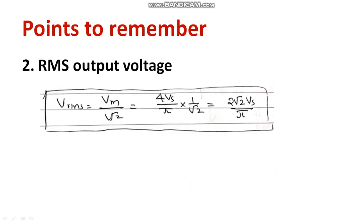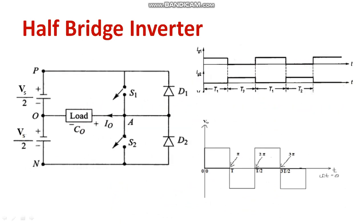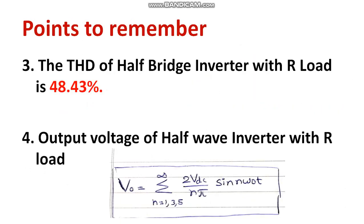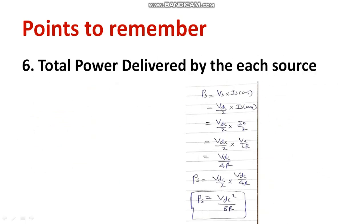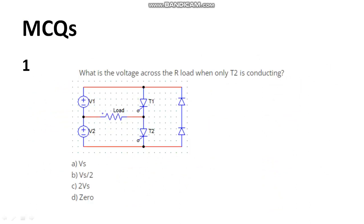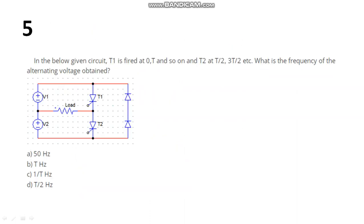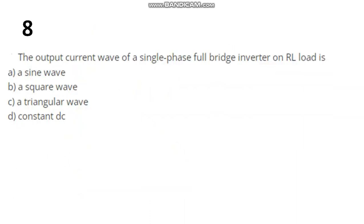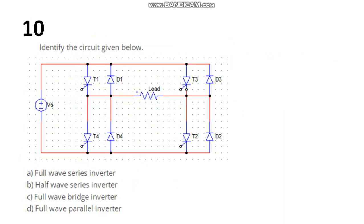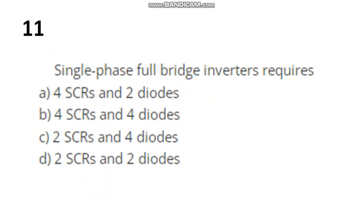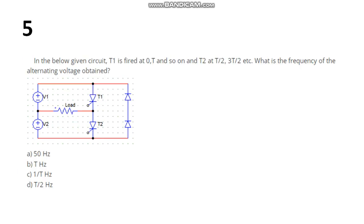Looking at the circuit diagram, we have Vs/2 and Vs/2 — two sources. That is why total power delivered by each source is Vdc² / 8R. These are the important concepts. I request you to go through the practice questions — there are 10 to 11 questions based on reference material, and I request you to answer them accordingly.